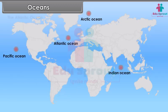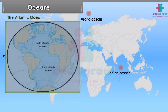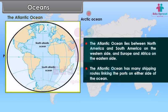The Atlantic Ocean lies between North America and South America on the western side, and Europe and Africa on the eastern side. The Atlantic Ocean has many shipping routes linking the ports on either side of the ocean.